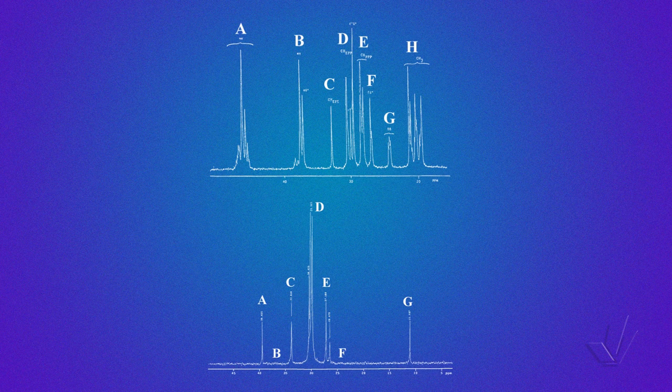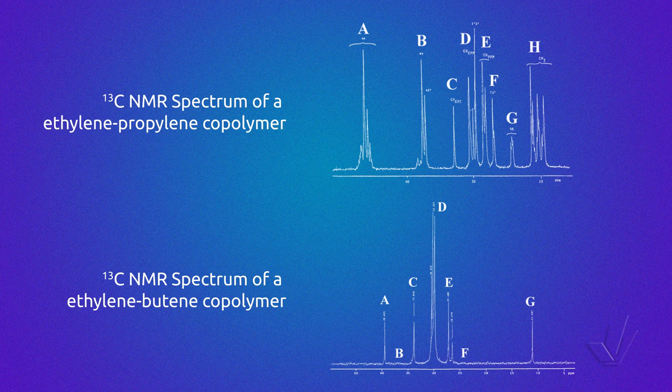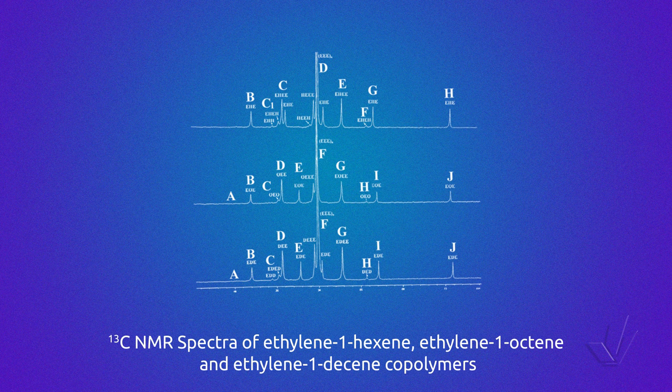The integrals, denoted by letter T and related to the triads, are not individual integrals but integrals from an area of the spectra. Spectra of ethylene-propylene and ethylene-1-butene copolymers are shown with letters A to H over the resonances, indicating the respective areas corresponding to the integrals in the table. Sometimes it is more convenient to calculate the integral from an area rather than individual ones to minimize errors due to overlapping. The integral areas for ethylene-1-hexene, ethylene-1-octene, and ethylene-1-decene are also shown.